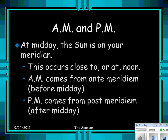Another tidbit: where we get AM and PM. At midday, the Sun is on your meridian, which occurs close to or at noon. AM comes from anti-meridiem, meaning before midday. PM comes from post-meridiem, meaning after midday.